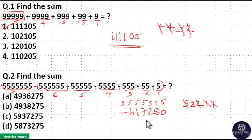5 minus 0 is 5. 15 minus 8 is 7. 4 minus 2 is 2. 15 minus 7 is 8. 4 minus 1 is 3. 15 minus 9 is 9. 4 minus 0 is 4. So 4938275, option B is your answer.